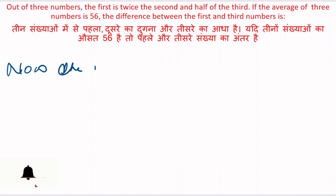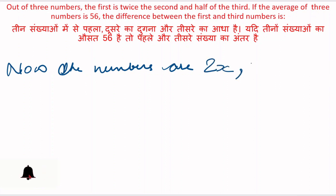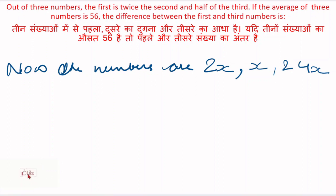Now the numbers are: first number = 2x, second number = x, and third number = 4x. The question states: if the average of 3 numbers is 56, yadi tino sankhyao ka ausat 56 hai, to difference between the first and third number nikalna hai. Average diya wa hai — tino number ka average.